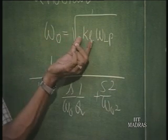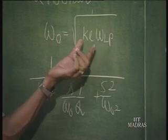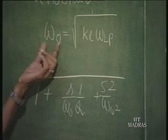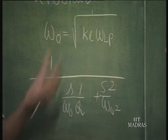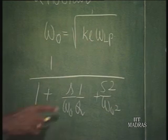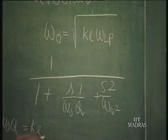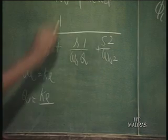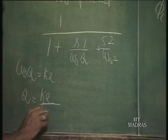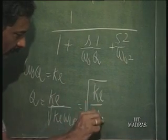Omega_naught is quickly identified as root of K_L times omega_Lp. If K_L is high, omega_naught is going to be high, though omega_Lp may be low so omega_naught is much less than K_L itself. Q of this circuit satisfies omega_naught times Q equals K_L, so Q equals K_L over omega_naught, which is root of K_L over omega_Lp.